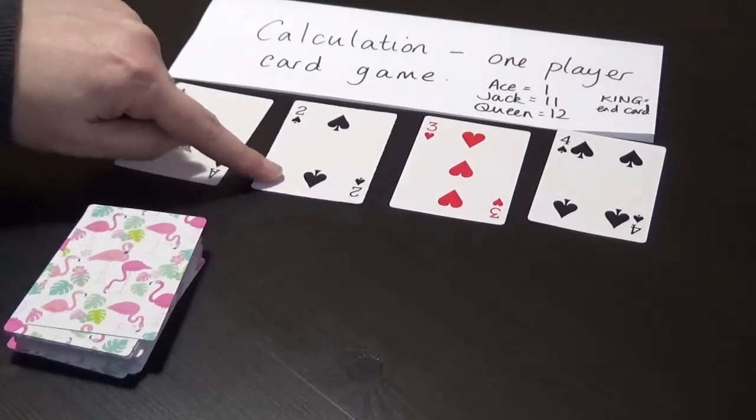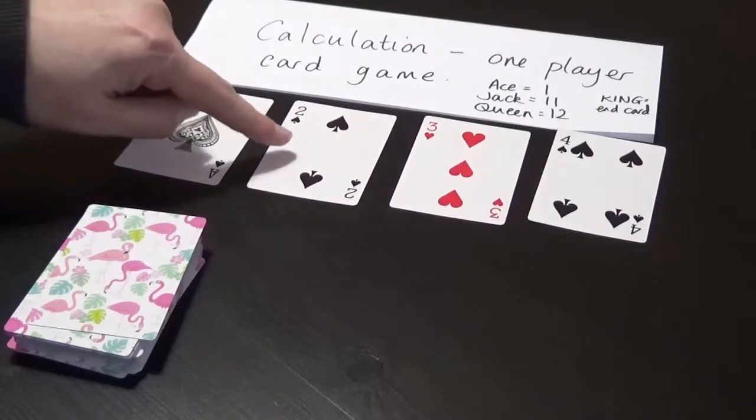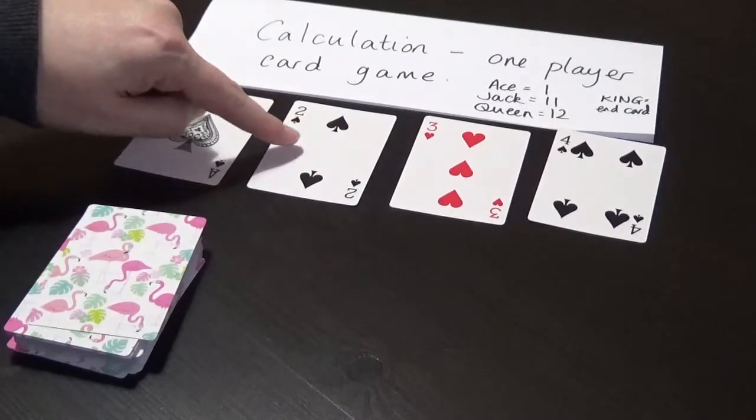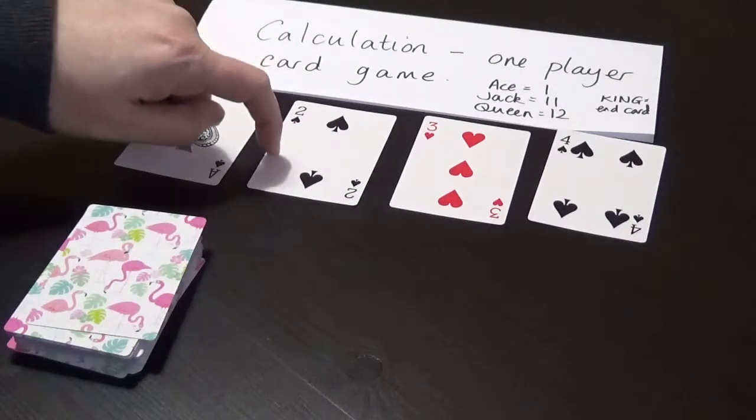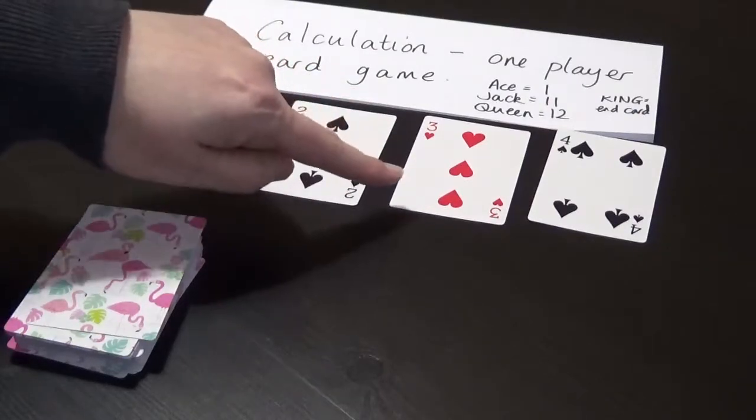On the 2 cards, you're only allowed to go up in multiples of 2. So we're looking for 2, 4, 6, 8, 10, and then Queen, King. You've got the idea now.